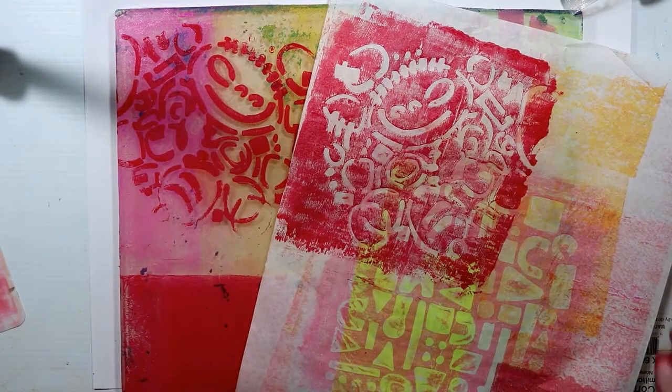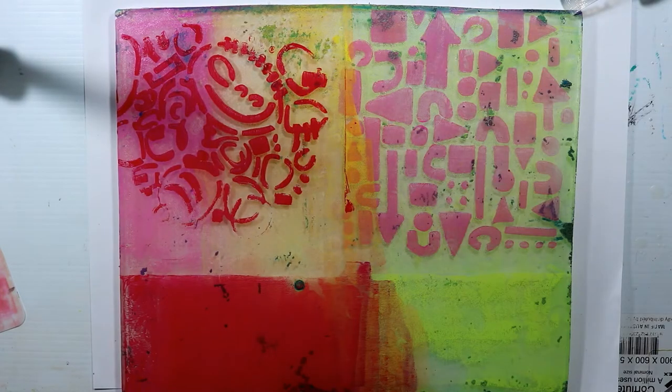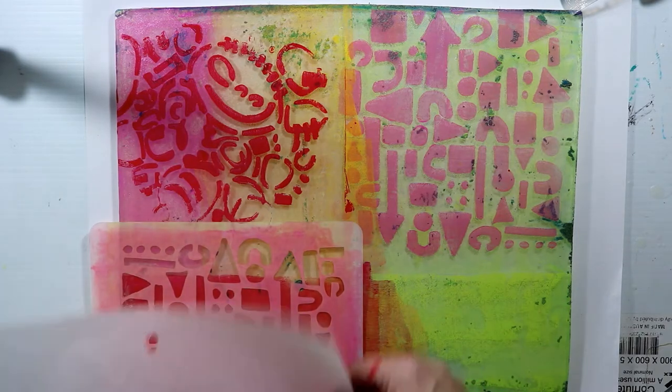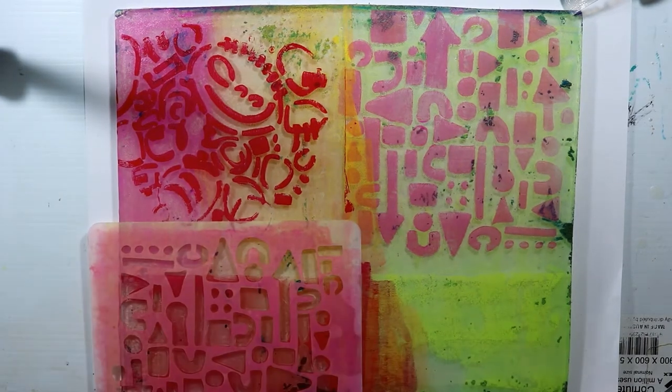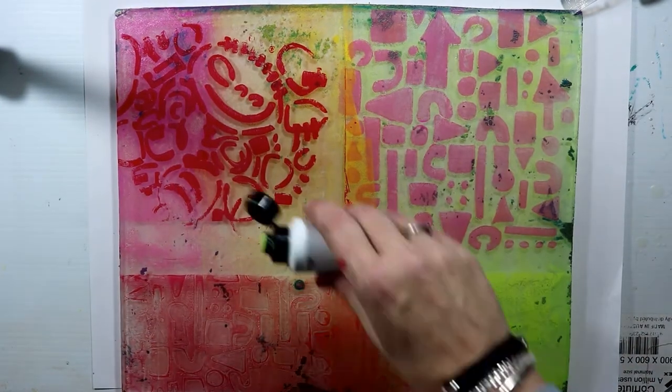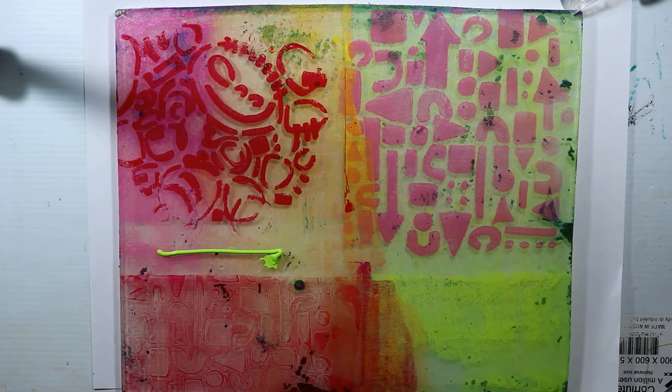This is a gorgeous ruby color. What I've been doing is I've actually been placing the negative of the stencil onto a scrap piece of paper. So I'm not just pulling prints off of the plate directly, but I'm also creating prints by using the leftover that's on the stencil.